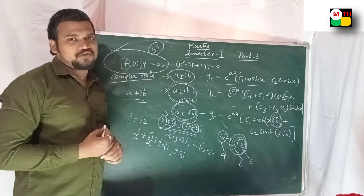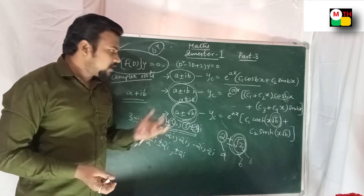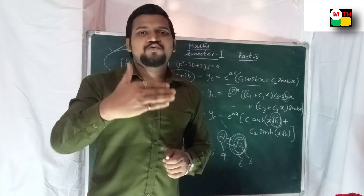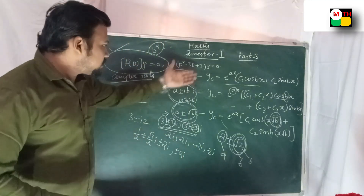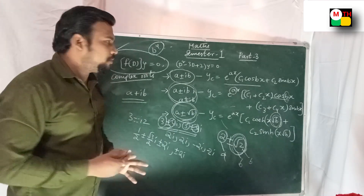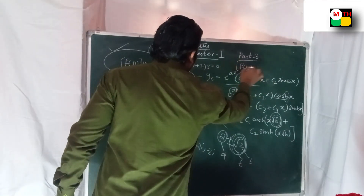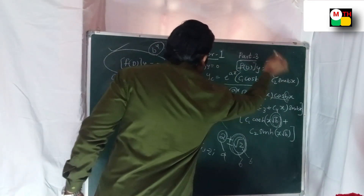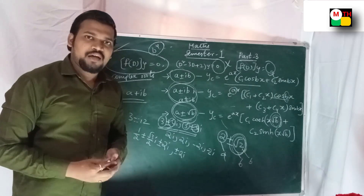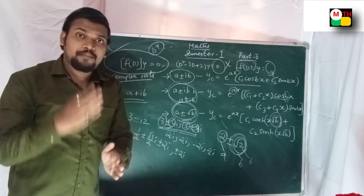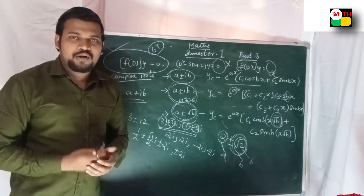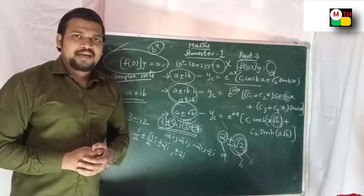So there are 3 models: Case 1, Case 2, Case 3. Try them out. The next video is Part 4, where f(D) into y equals Q — that is the next model. So like and share this video. Subscribe for every video, every subject, every semester. Thank you so much.